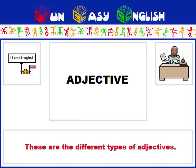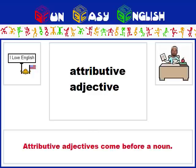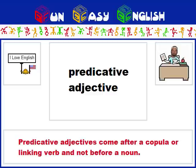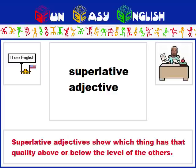These are the different types of adjectives. Attributive adjectives come before a noun. Comparative adjectives are used to compare two things. Predicative adjectives come after a copula or linking verb and not before a noun. Superlative adjectives show which thing has that quality above or below the level of the others.